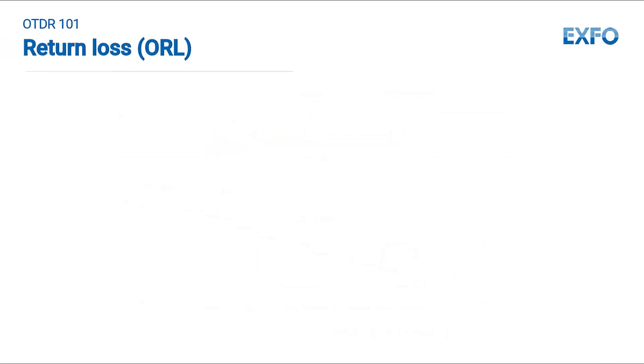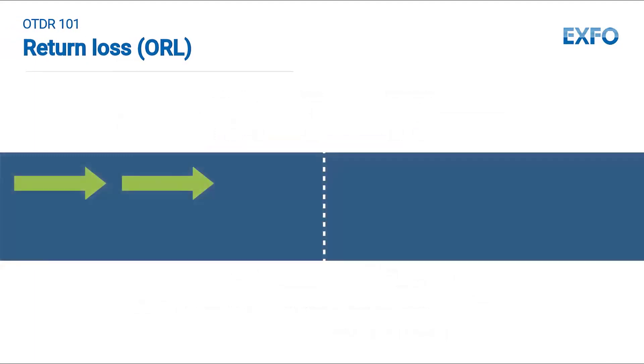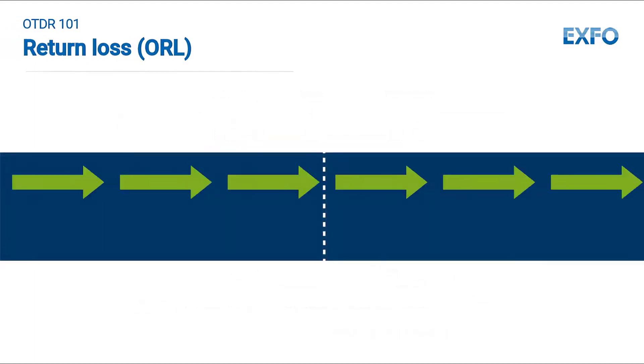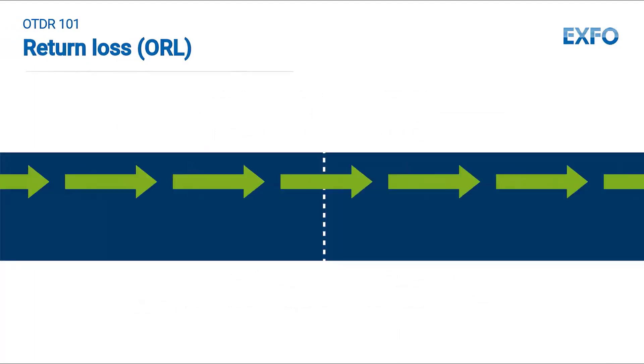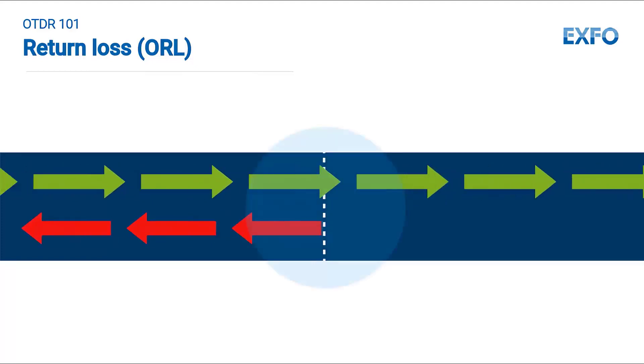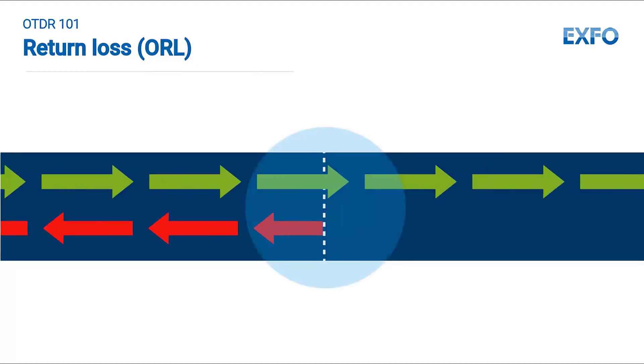Optical return loss (ORL): too high levels of reflections, mainly caused by bad connectors, may create instability in the transmitter, lowering signal and service quality.